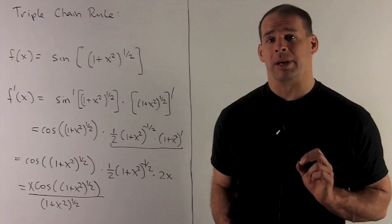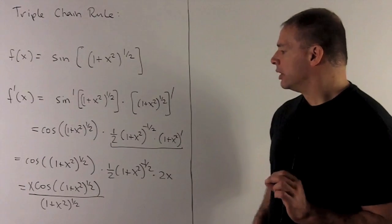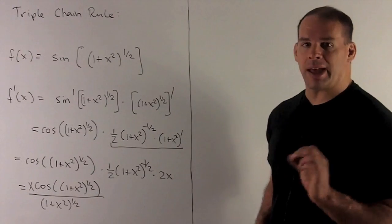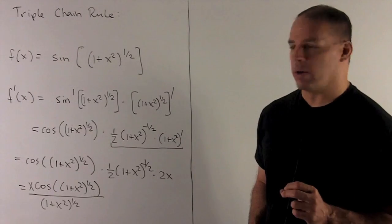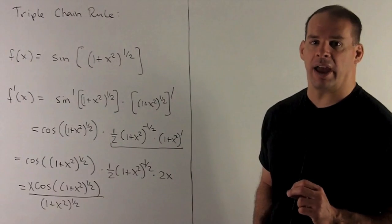but put it in the denominator as so. So, my final answer winds up being x cosine 1 plus x squared to the 1 half all over 1 plus x squared to the 1 half.